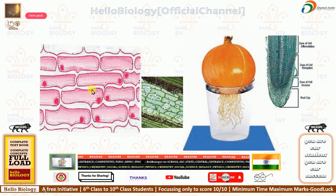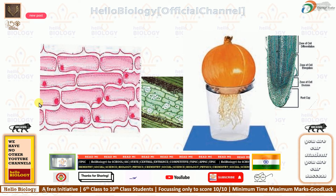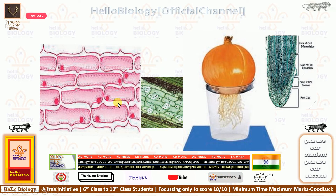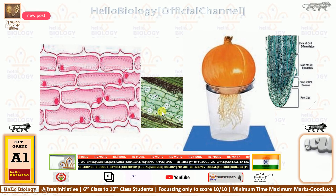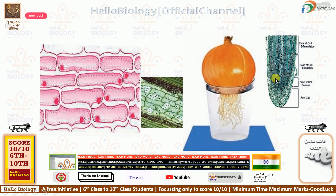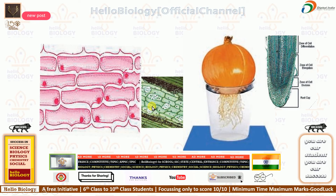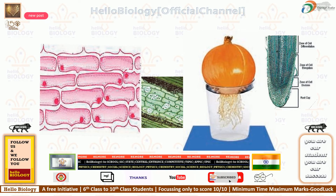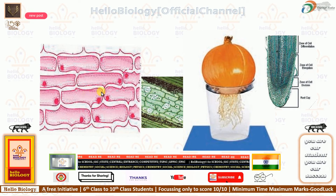Here onion tissues are shown. What are tissues? A group of cells — these are groups of cells. So any group of cells is called a tissue. Here we are discussing about plant tissues, so it is plant tissues.